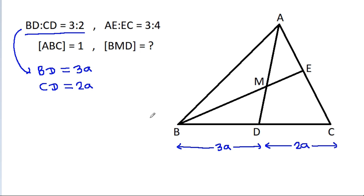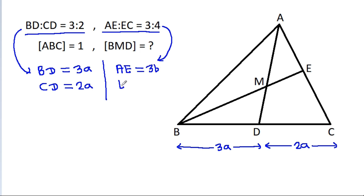And we have AE ratio EC is equal to 3 ratio 4. That means, if AE is 3b, then EC it will be equal to 4b.